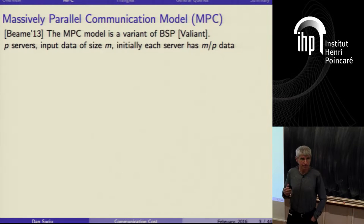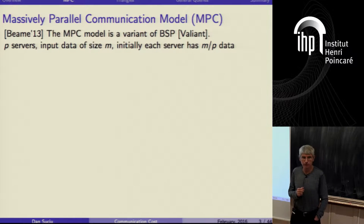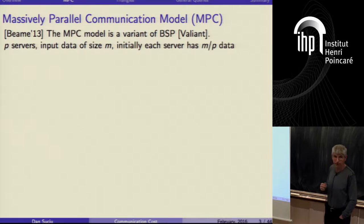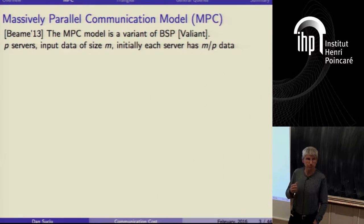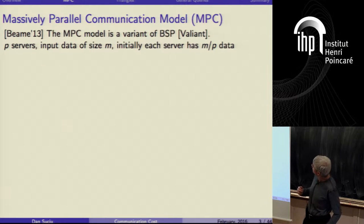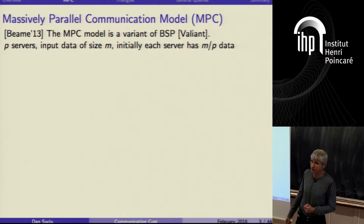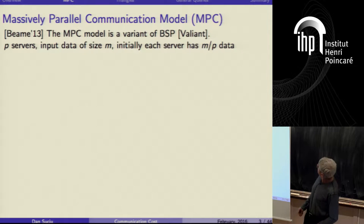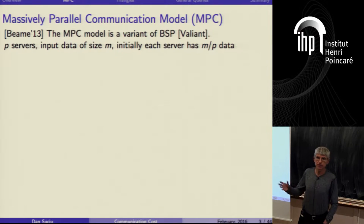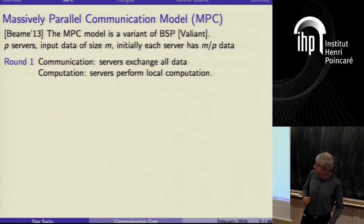The model we are going to use is a mathematical model — a simplification or variation of the BSP model by Valiant — in which computation is done by P independent servers. These servers are connected by a network; each server can communicate with every other server. The data, the input, is of size M, and initially the data is uniformly distributed on these P servers. The computation proceeds in rounds.